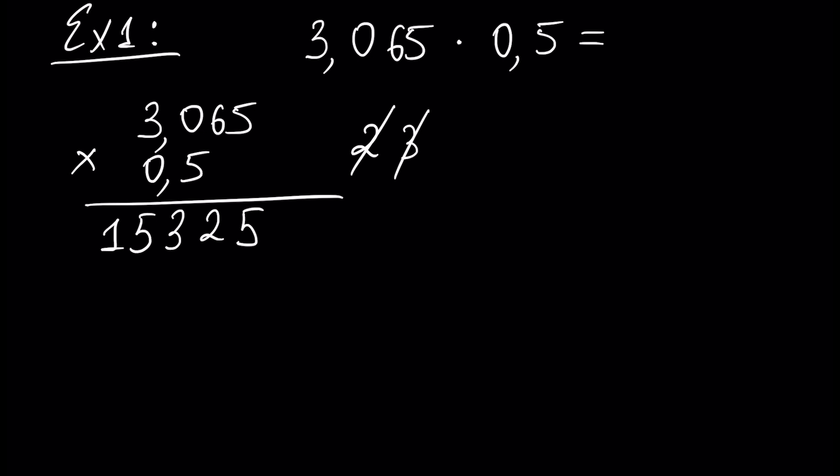We can also formally multiply by the first digit. 0 times 5 is 0. 0 times 6 is 0. 0 times 0 is 0, and 0 times 3 is 0.